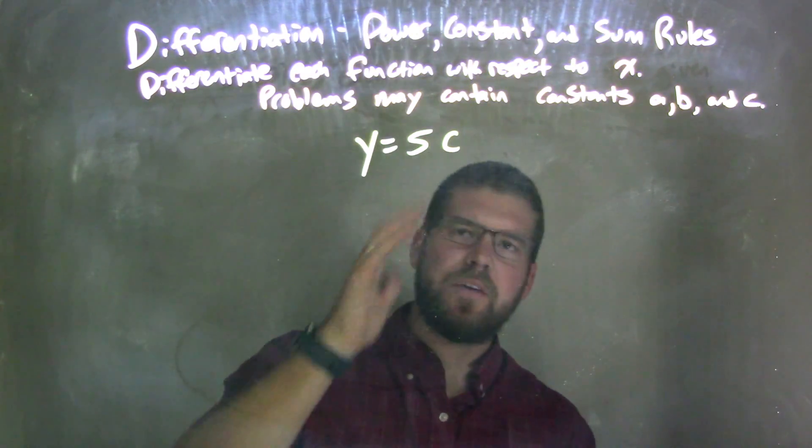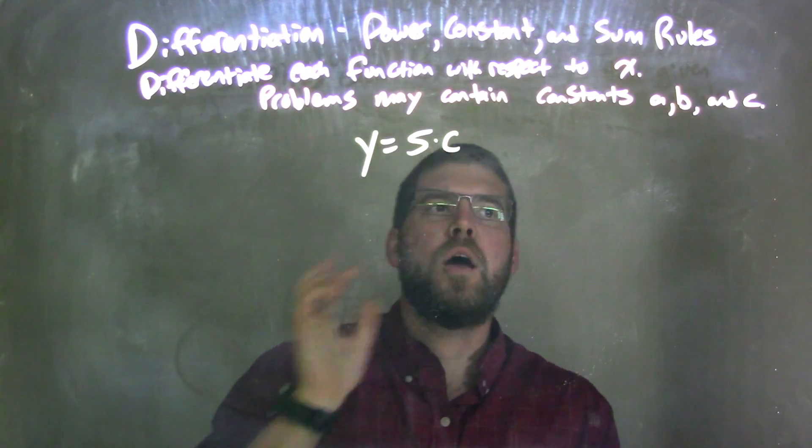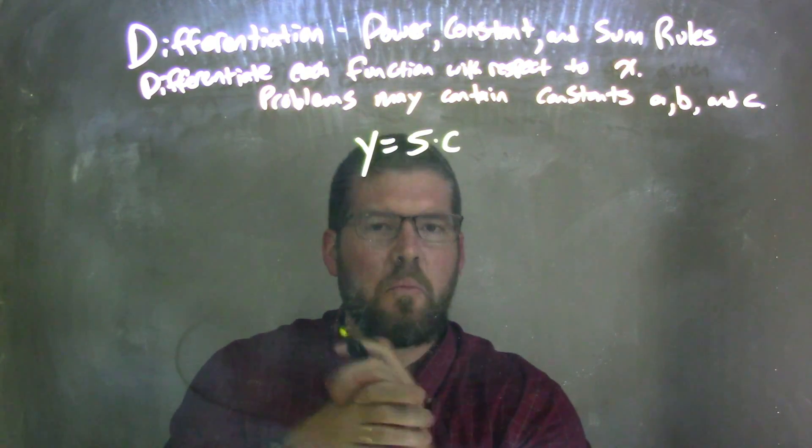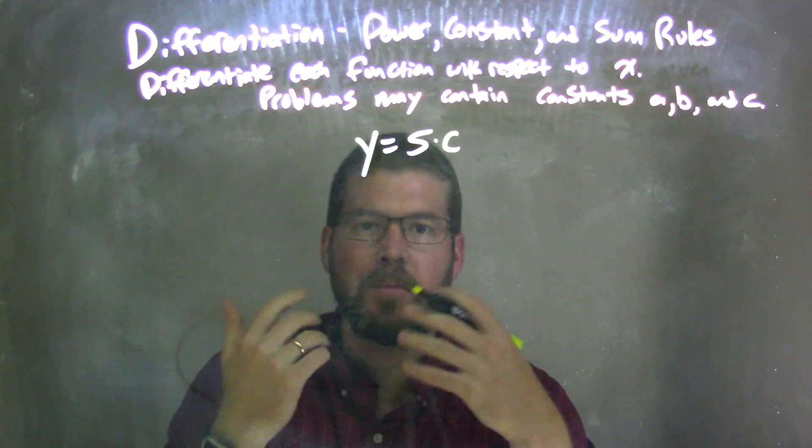That's 5 times c. And I wanted to derive that. Well, the key thing here is it tells us that c is a constant. What constant is it? I don't know, but it has the properties of a constant, some number.